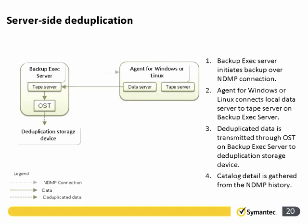For server-side deduplication — where the client is a very busy server and you don't want to use its CPU and memory — Backup Exec makes an NDMP connection to the agent. The agent gathers data, puts it in MTF format, and sends it to Backup Exec. The Backup Exec server has a tape server role and OST plug-in that chunks the data, sends fingerprints, and decides what to store. What crosses the wire from client to server is full data, but you can configure all jobs to take best advantage of the resources in your environment.